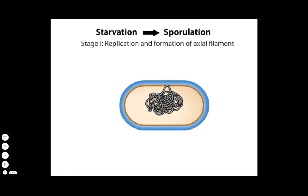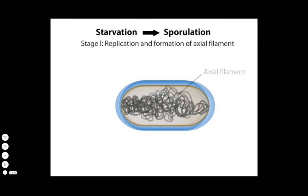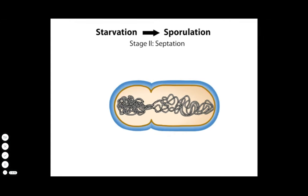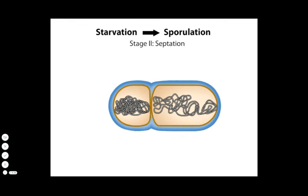Stage 1 involves replicating and stretching the DNA into a long axial filament that spans the length of the cell. Ultimately, one of the polar division sites wins out, and in stage 2, septation occurs, dividing the cell into two unequal compartments: the fore-spore, which will ultimately become the spore, and the larger mother cell from which it's derived. Each compartment contains a chromosome.